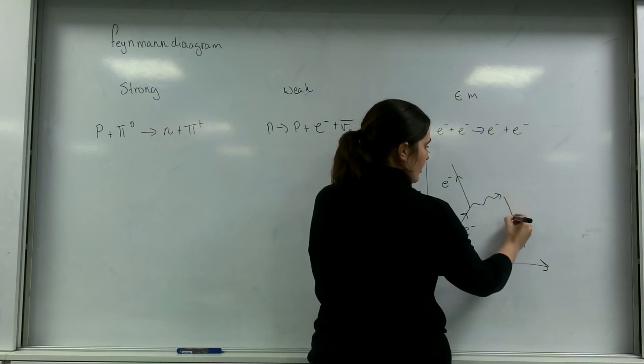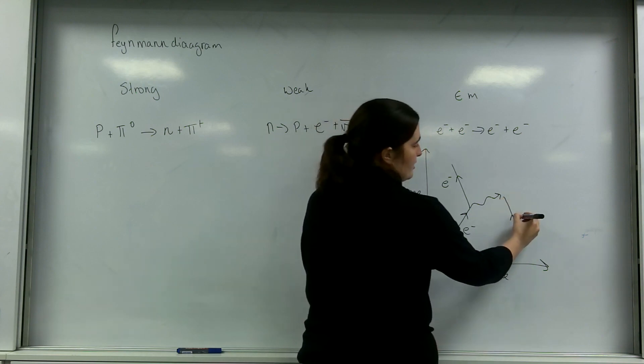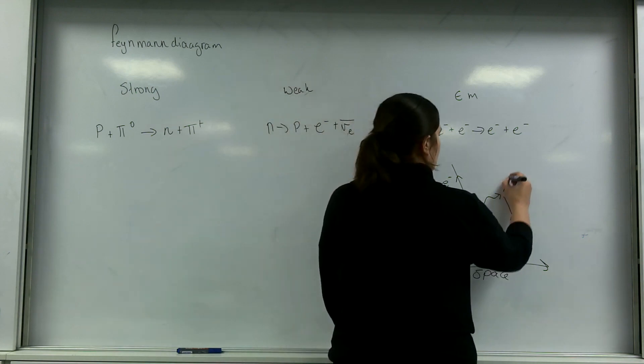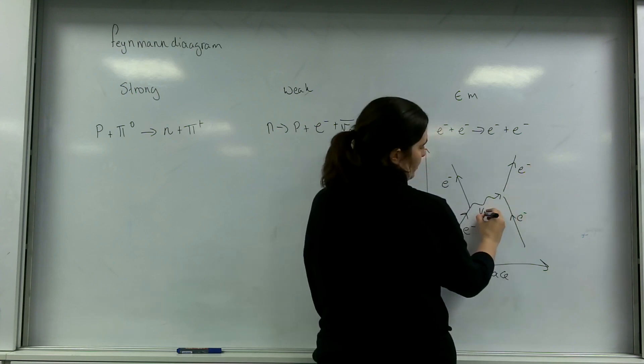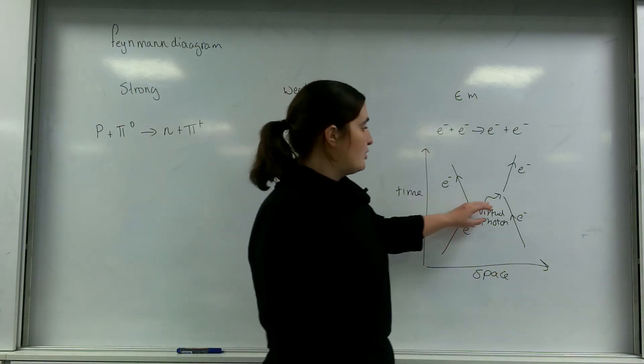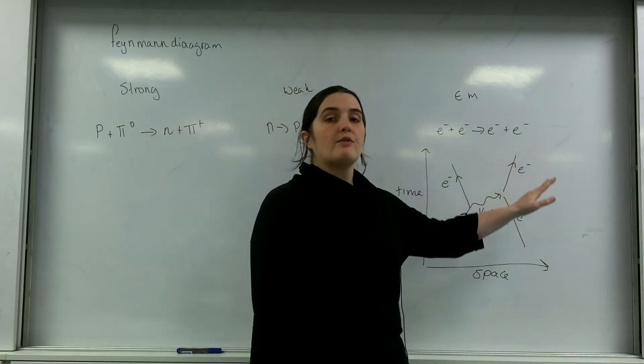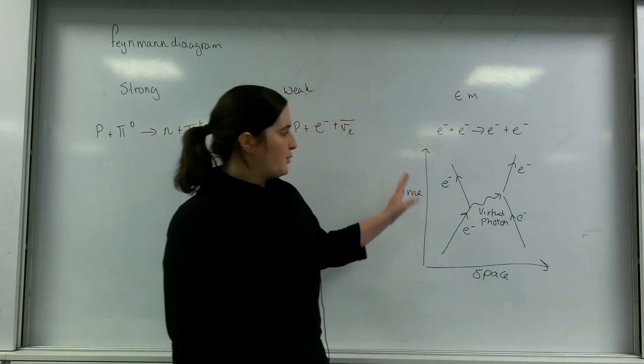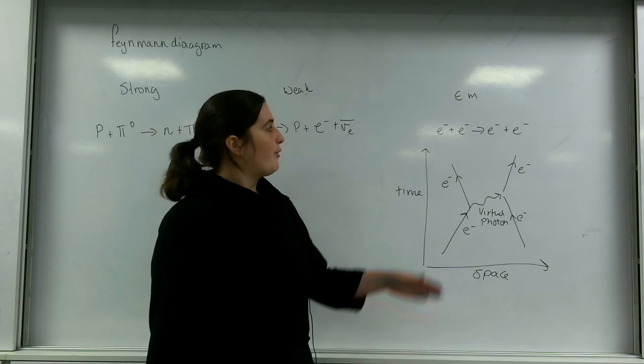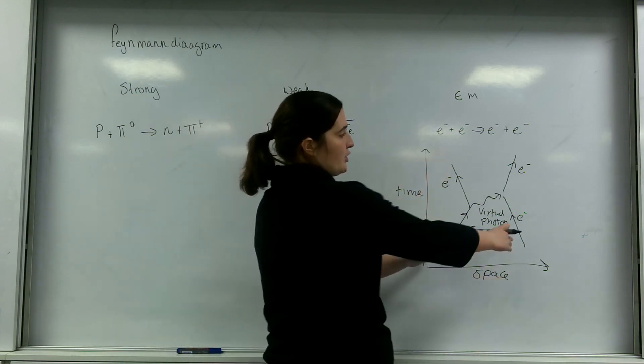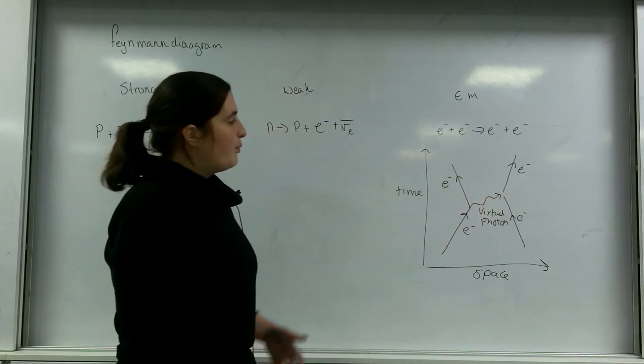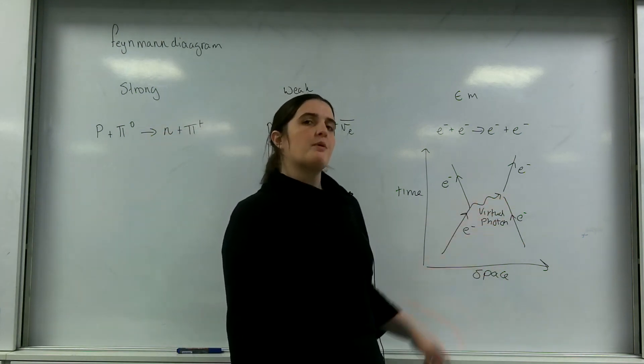Another electron comes in and feels this extra energy, this energy that's been transferred. This virtual photon transfers this energy to this electron, which changes its direction. It's a useful tool to visualize what's going on. You can also go the other way and look at a Feynman diagram and get the equation from it. I know that these two have come in and those two have gone out. The reason I know the bits that come out is before and after the exchange particle has existed.